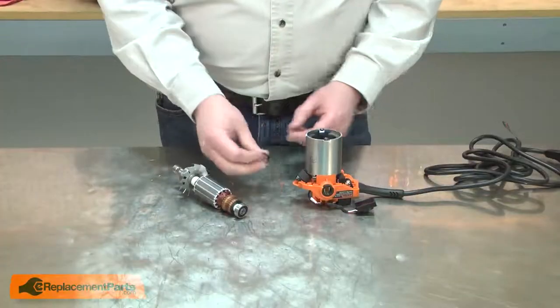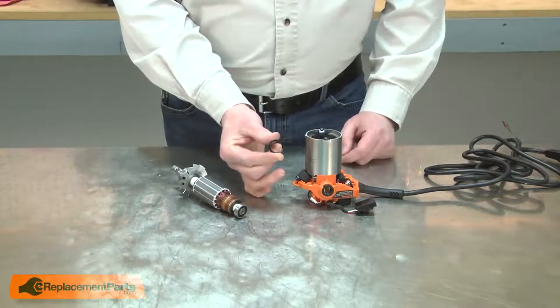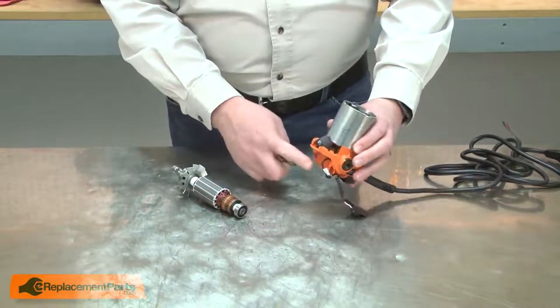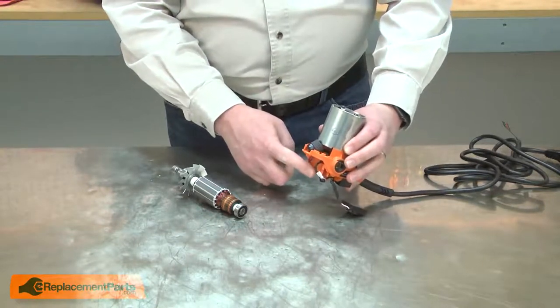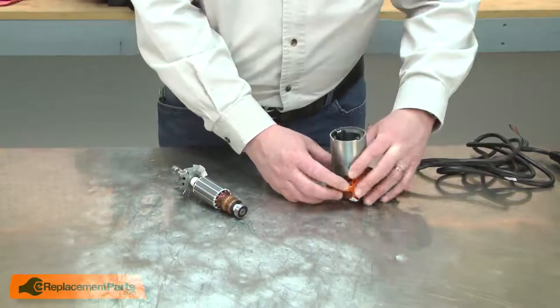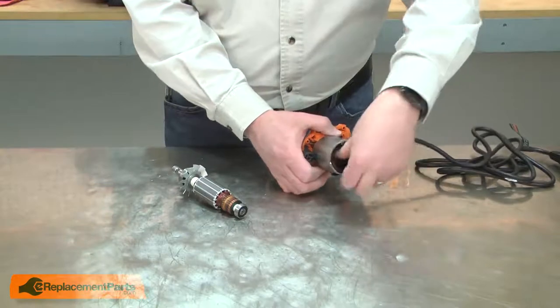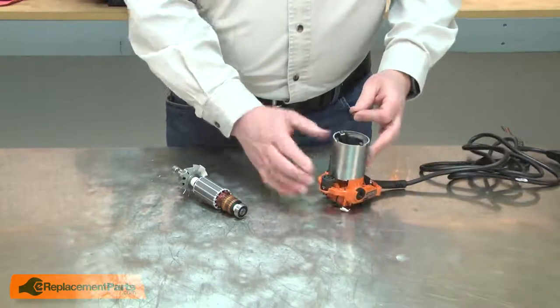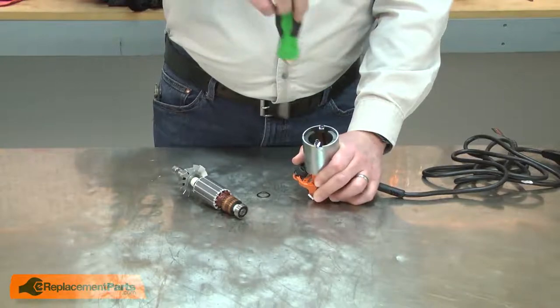As you reinstall the armature, you'll quickly realize you're faced with quite the conundrum. The wavy washer needs to go into the base of the plastic housing. The problem is when you try to install the washer, it's pulled away by the field magnets, so I'll need to remove the field. The field is secured with two Phillips screws.